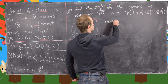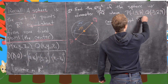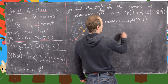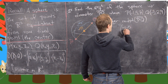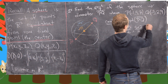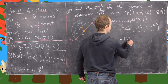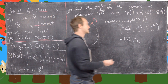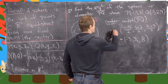The center is the midpoint of PQ. We compute: x-coordinate: (−1 + (−5))/2 = −6/2 = −3; y-coordinate: (5 + 2)/2 = 7/2; z-coordinate: (7 + 9)/2 = 16/2 = 8. So the center M is (−3, 7/2, 8).